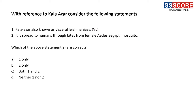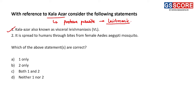Second question: with reference to Kala Azar, consider the following statements. First statement — Kala Azar is also known as visceral leishmaniasis. This statement is correct because Kala Azar is caused by a protozoa parasite called Leishmania, and as a result the disease is also called visceral leishmaniasis. First statement is correct.